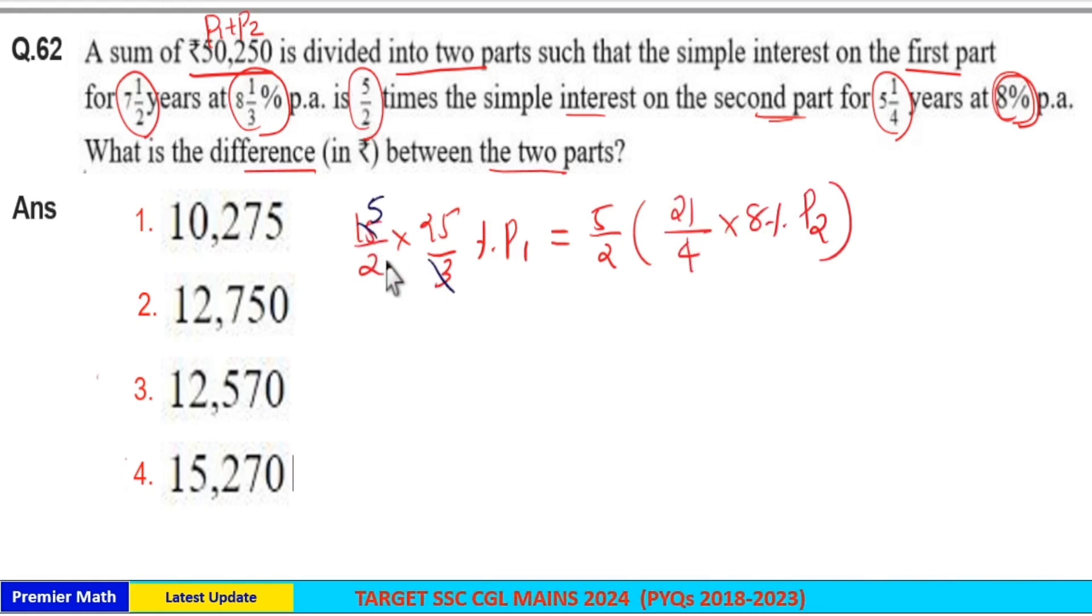five times in 15, 5/2, 5/2 cancel, percentage percentage cancel, four goes two times in eight. Now the remaining is P1/P2 equals 21 into 2 is 42 divided by 25.